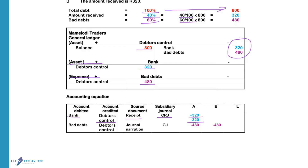The bad debts account is debited to increase the expense. Expenses decrease profits so equity will decrease with 480. Debtors control is an asset so we decrease the assets with 480. Bad debts is written off in the general journal and we will complete a journal narration as source document.